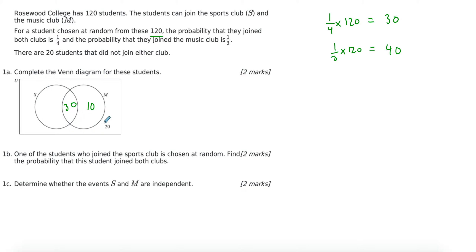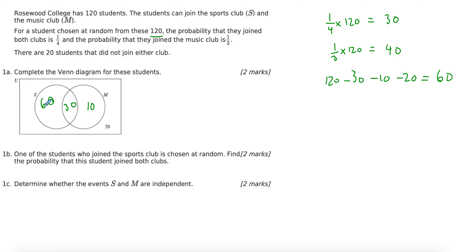I don't have a probability for sports, but all of these should add up to 120. So I go 120 minus 30 minus 10 minus 20, which gives me 60 — that's sports only. You get one mark for the 30 and the last mark for the 60 and 10 placed in the correct positions. If you've done it incorrectly, your marks will follow through for the other parts, so don't worry.